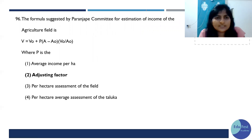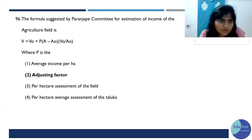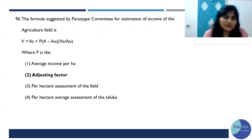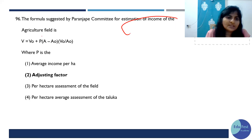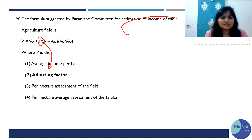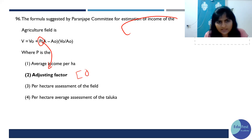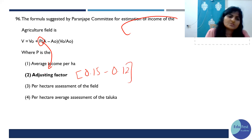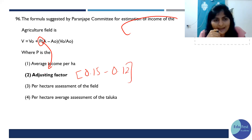The formula suggested by the Paranspe Committee for estimation of income group: in that formula, P is the adjusting factor. The value of P varies from approximately 0.15 to 0.153. So yes, P is the adjusting factor.